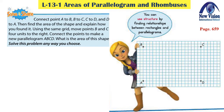Let's start our today's lesson with Solve and Share. Connect point A to B, B to C, C to D, and D to A. Then find the area of the shape and explain how you found it. Using the same grid, move points B and C 4 units to the right, connect the points to make a new parallelogram ABCD. What is the area of this shape? Solve this problem any way you choose.